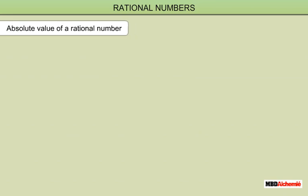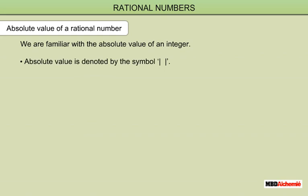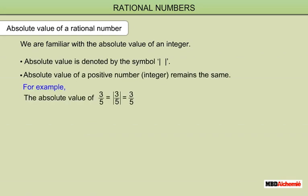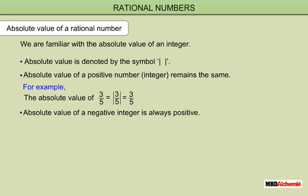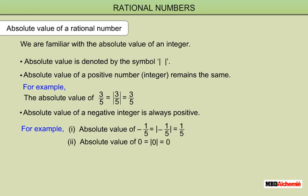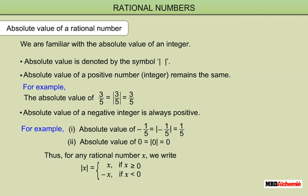Absolute Value of a Rational Number: we are familiar with the absolute value of an integer. Absolute value is denoted by the modulus symbol. The absolute value of a positive number remains the same; for example, the absolute value of 3 upon 5 is equal to 3 upon 5. The absolute value of a negative number is always positive; for example, the absolute value of minus 1 upon 5 is equal to 1 upon 5. The absolute value of 0 is 0 itself. Thus, for any rational number x, modulus of x equals x if x is greater than or equal to 0, and equals negative x if x is strictly less than 0.